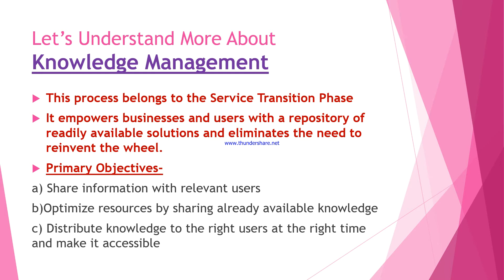The next objective is to distribute knowledge to the right user at the right time and make it accessible. Some information is available to us, but it has to be shared with the correct user, and we have to decide when that information should be shared and ensure it is accessible to those particular users. That is also a primary objective of knowledge management.